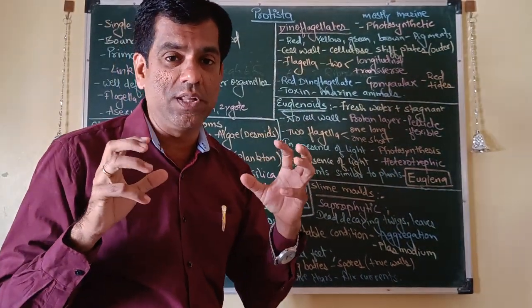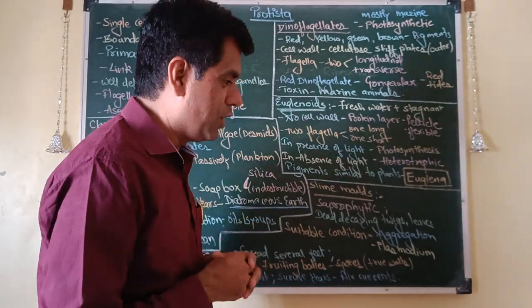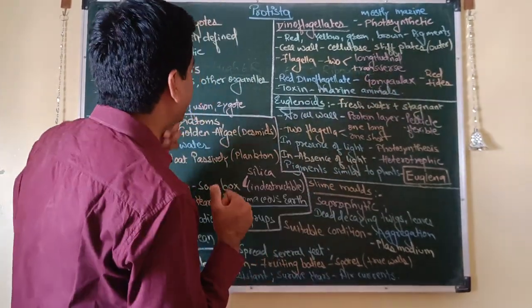Being photosynthetic, they are the chief producers in your ocean, so they are going to be the starters of the food chain.